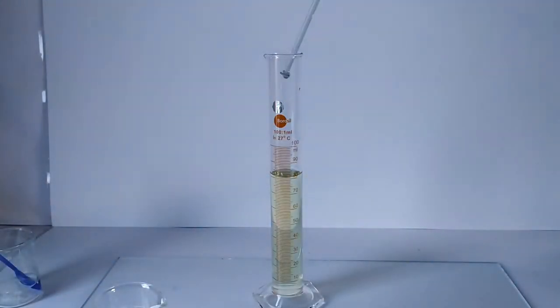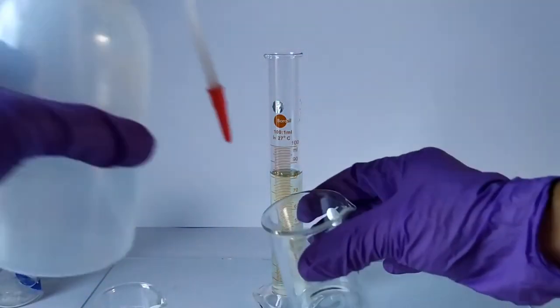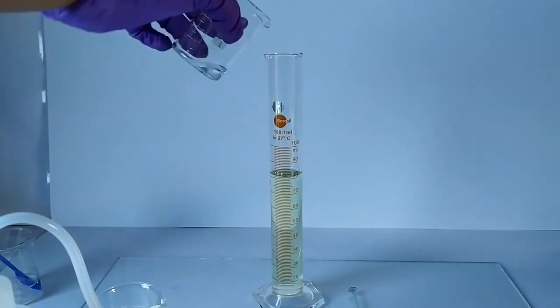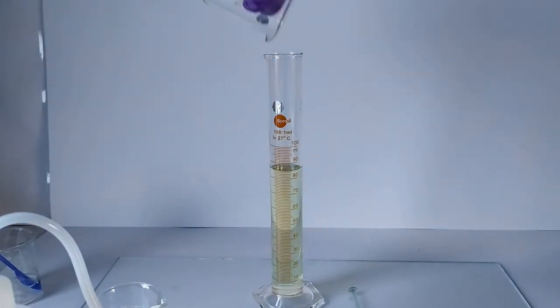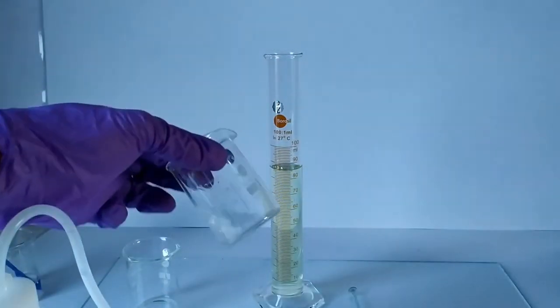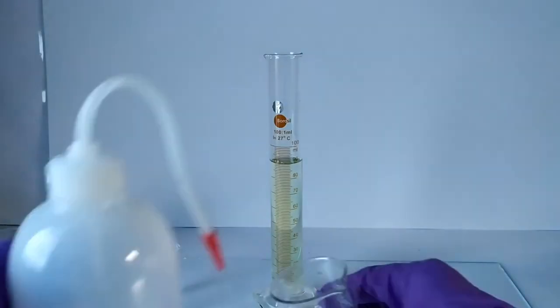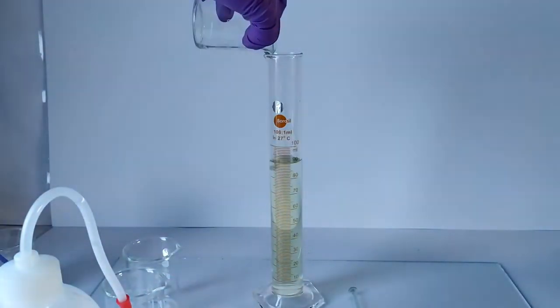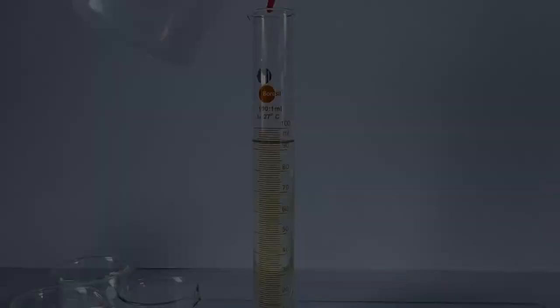Rinse the stirring rod and the three beakers used to contain the three solutions at the start of our preparation using minimal quantities of distilled water and pour the rinsings into the cylinder or flask. This ensures complete transfer of all traces of the reagent components into the cylinder.